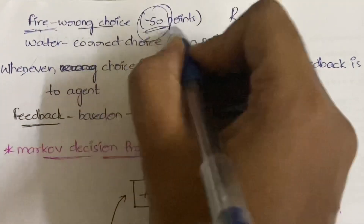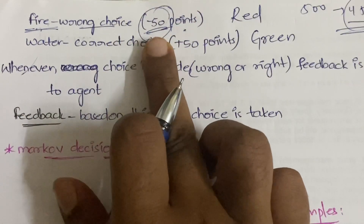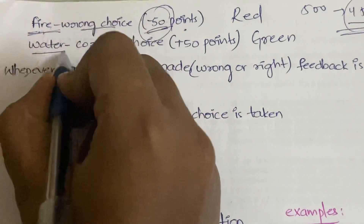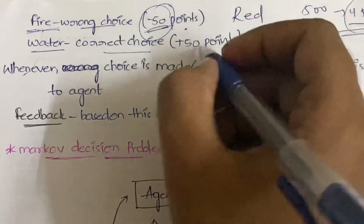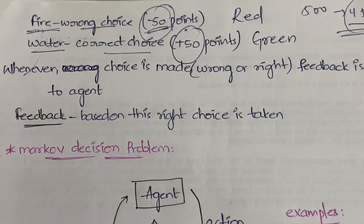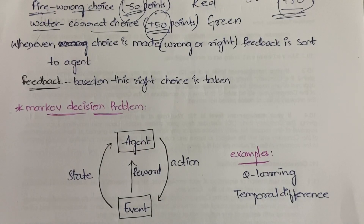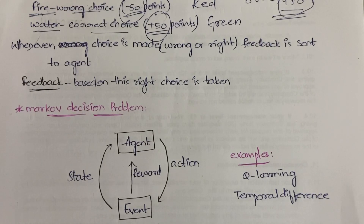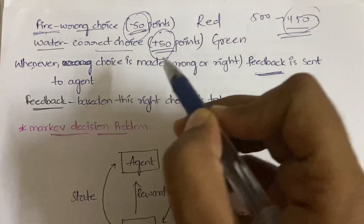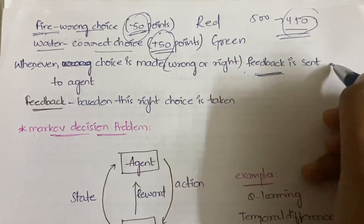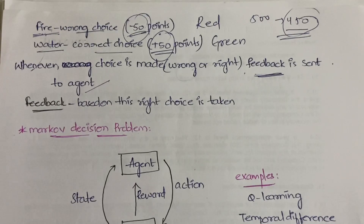Whenever he chooses fire, since it is the wrong choice, we give him negative 50 points. Suppose he has 500 points — if he chooses fire, his points become 450. So we deduct minus 50 for choosing fire. Suppose he chooses water — since it is the correct choice, we give him plus 50 points. You can give any kind of indication. So whenever an action is taken, whether by a user, agent, or gamer, we give an indication of whether it is wrong or right — that is called feedback.